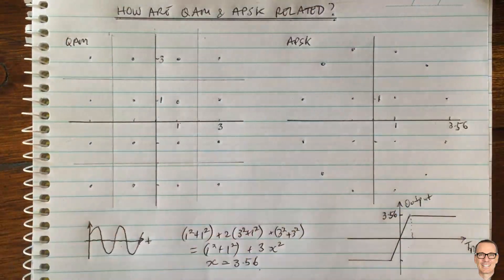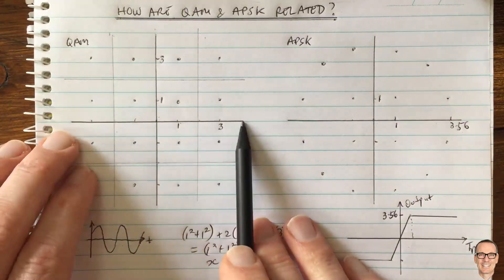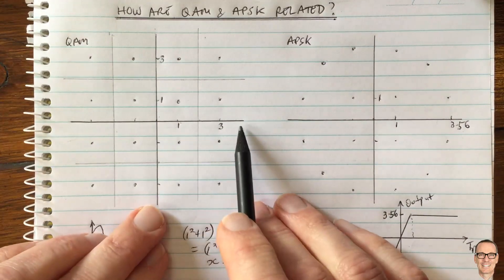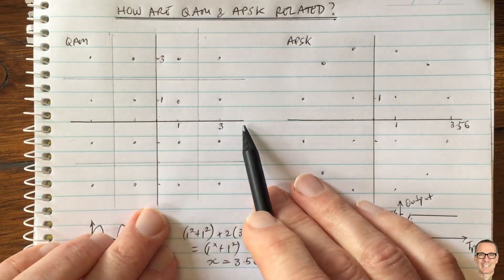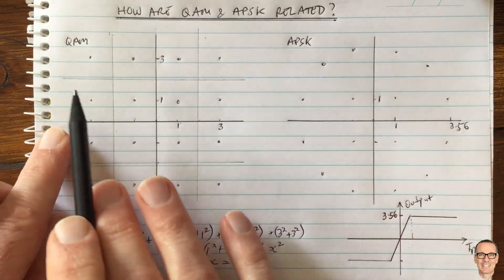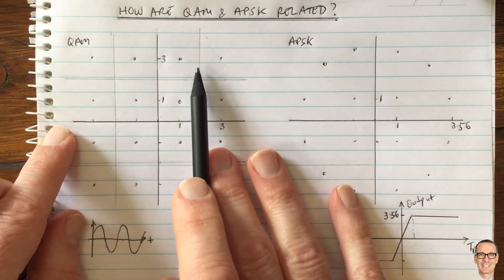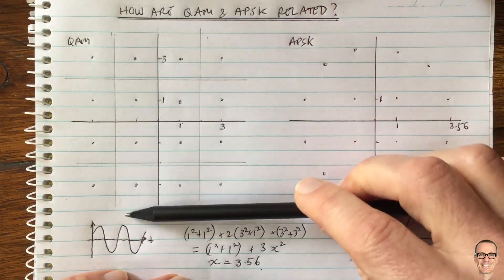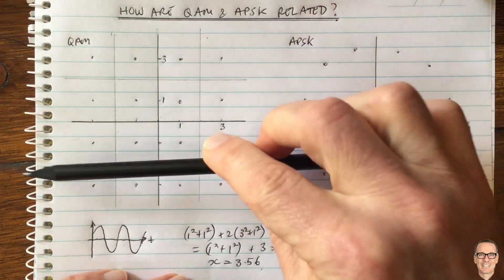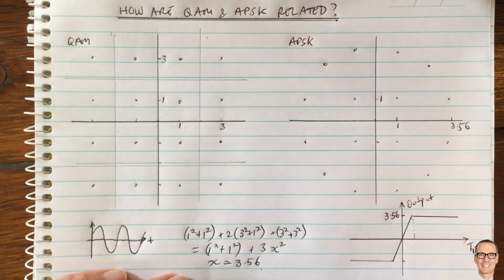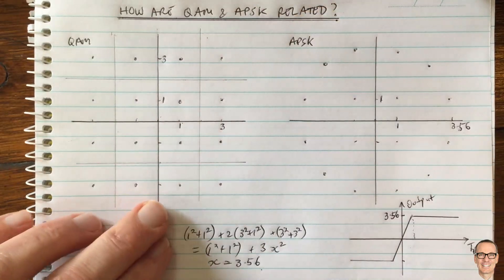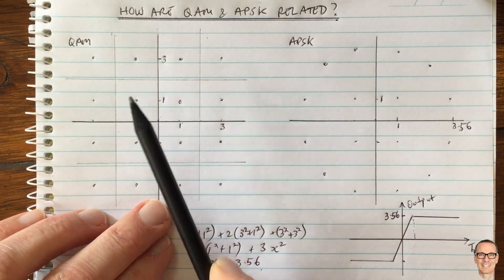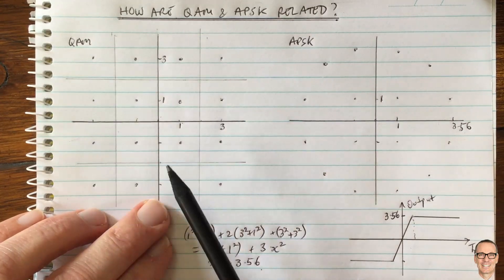You decode the in-phase and quadrature components separately. A superheterodyne receiver gives you the cosine component, and you apply vertical decision boundaries; you get the sine component and apply horizontal decision boundaries. This makes QAM reception very simple — and that's the advantage of QAM.